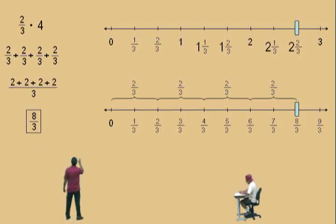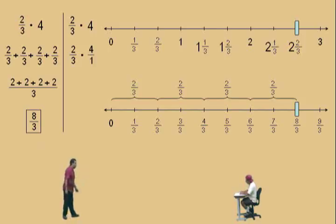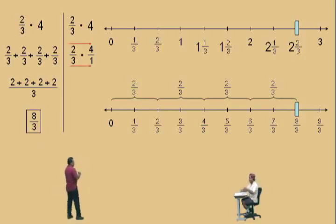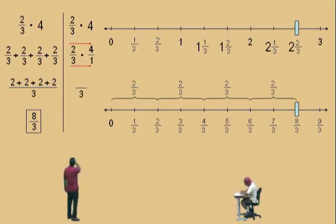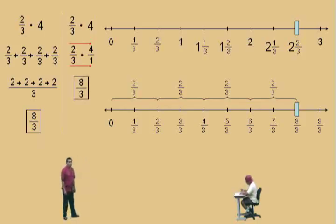Now let's do the same problem but just run through the arithmetic. 2 thirds times 4, Charlie. First of all, how do we write 4 as a fraction? 4 over 1. Put it over 1. Because 4 divided by 1 is 4. Now, how do we multiply fractions? Straight across the top, straight across the bottom. Let's put our fraction bar there and look at the denominator first. 3 times 1 — what is that, Charlie? 3. The denominator remains the same whenever you take a fraction by a whole number, because you'll have a 1 on the bottom, so 3 times 1 keeps the denominator as 3. And what's 2 times 4? 8. 8 thirds. So our answer is 8 thirds. Here we did it with the number line, and over here we did it with arithmetic.